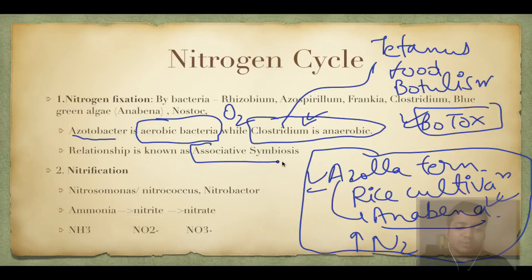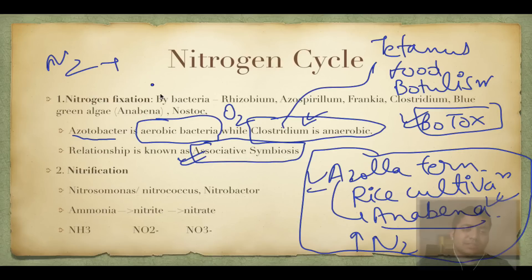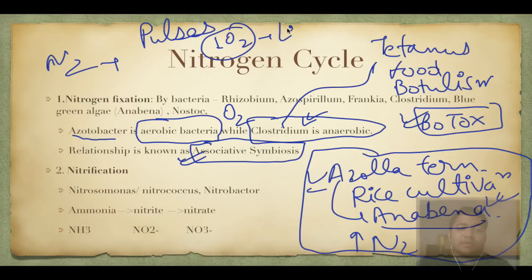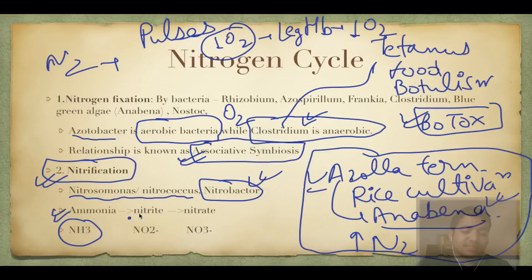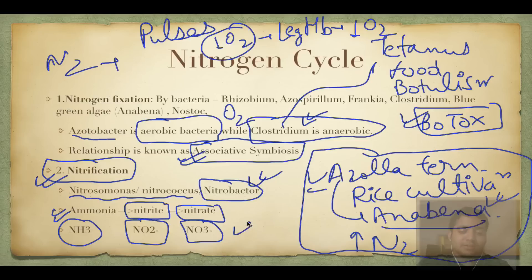This is called associative symbiosis. Atmospheric nitrogen is fixed in the roots of leguminous plants, which are pulses. Since fixation requires very low oxygen, they have leghemoglobin, which decreases the oxygen level and helps in nitrogen fixation. The second step is nitrification, done by Nitrosomonas, Nitrococcus, or Nitrobacter. This step converts ammonia (NH3) into nitrite (NO2-) and then into nitrate (NO3-).